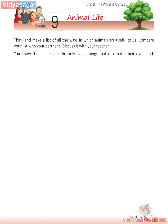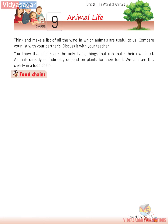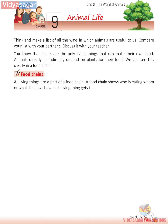You know that plants are the only living things that can make their own food. Animals directly or indirectly depend on plants for their food. We can see this clearly in a food chain. All living things are a part of a food chain. A food chain shows who is eating whom or what, and how each living thing gets its food.